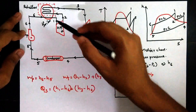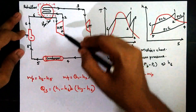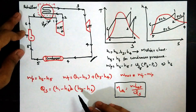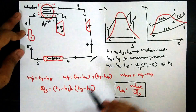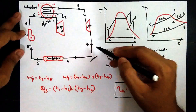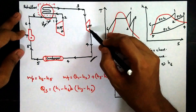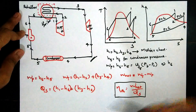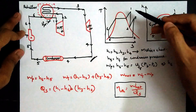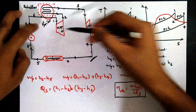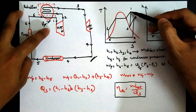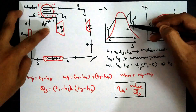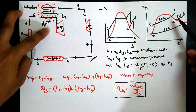The process 1 to 2 represents isentropic expansion in the high pressure turbine. Process 3 to 4 represents isentropic expansion in the low pressure turbine. Process 2 to 3, between the two turbines, is heat addition in the reheater at constant pressure.